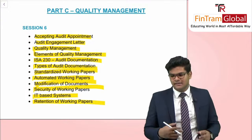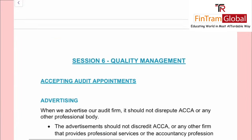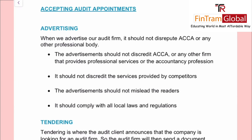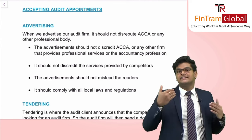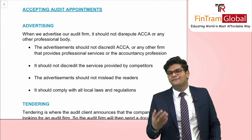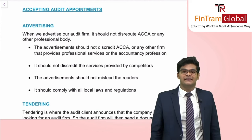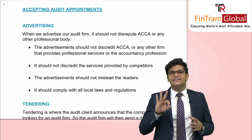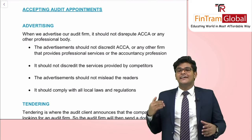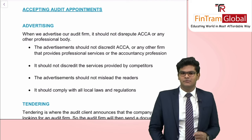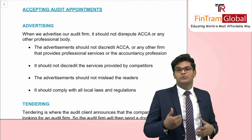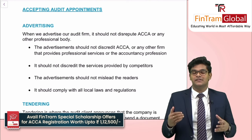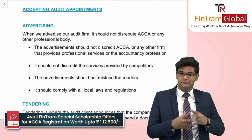Let's get started with the first topic: accepting audit appointments. The first thing to keep in mind is what methods exist for accepting a particular audit engagement, or how an audit firm gets an opportunity to audit a particular client. There are three basic methods. First, there is direct client request — this is straightforward. It's basically when a particular audit client approaches the audit firm requesting that they conduct the audit.